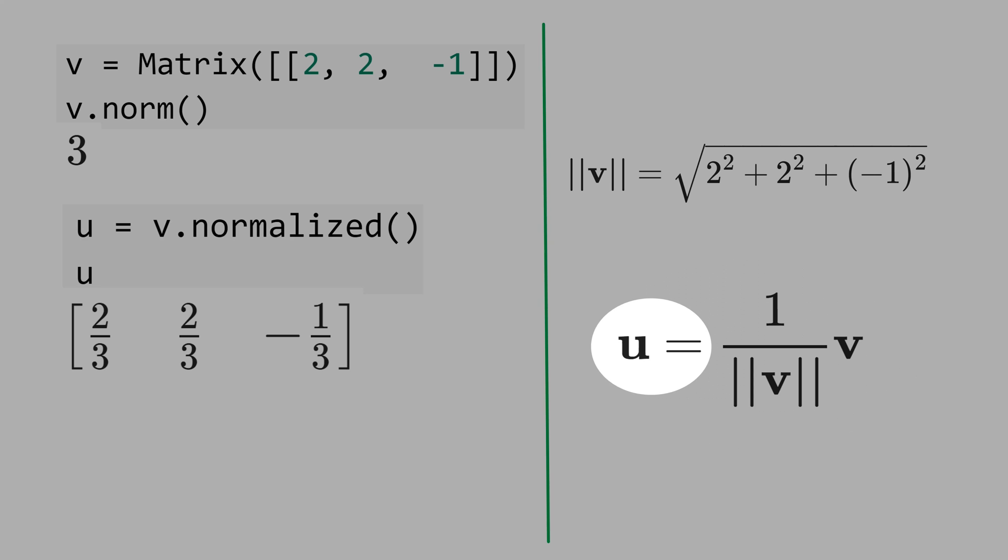Mathematically, what we did is u equals vector v divided by the norm of v. And you call u a unit vector.